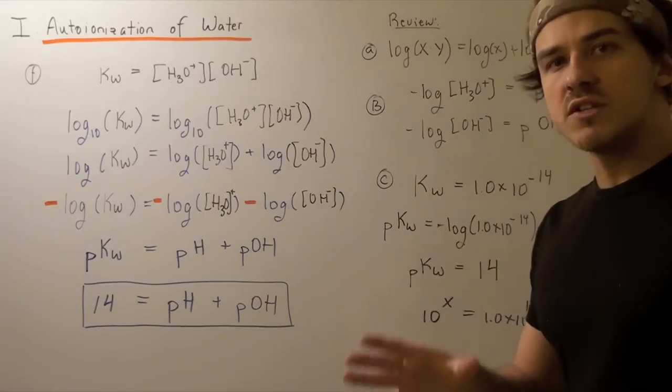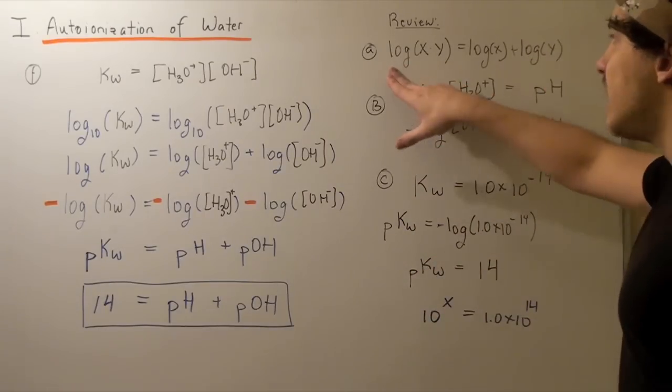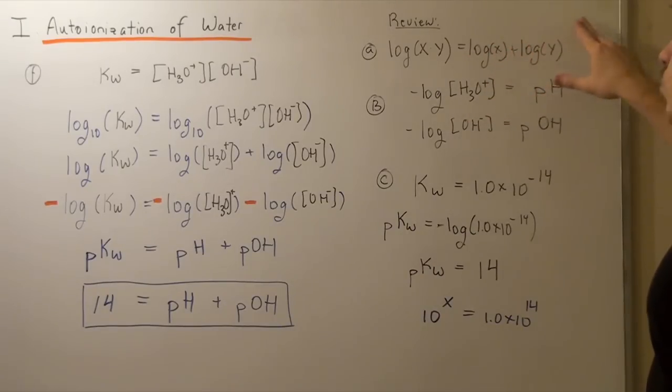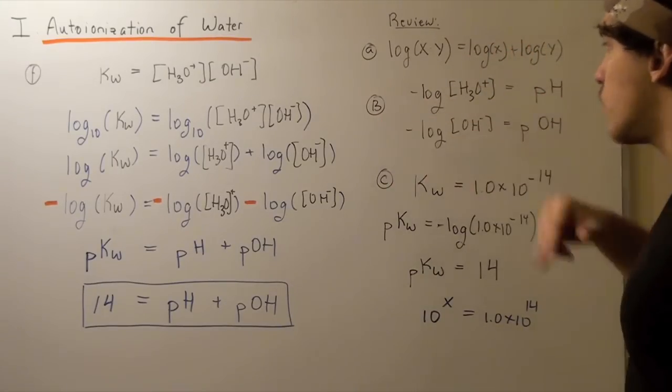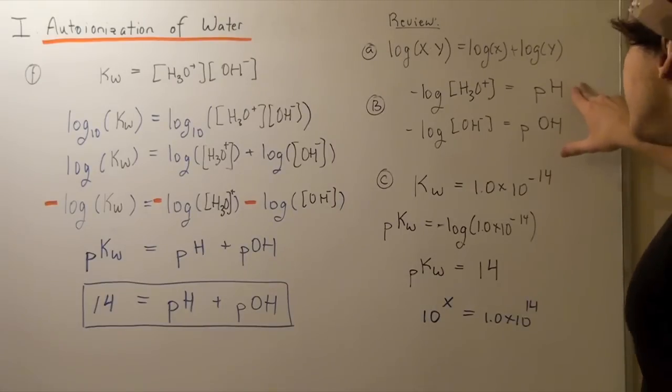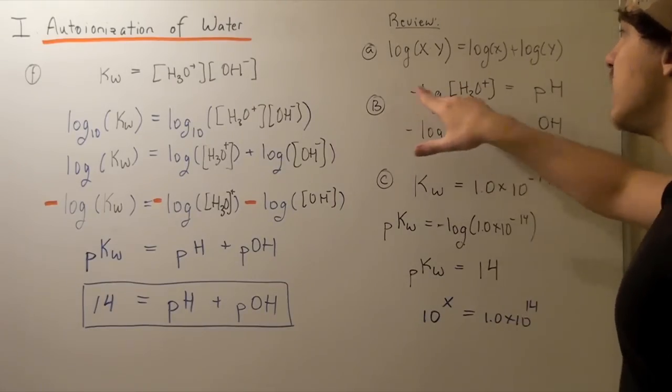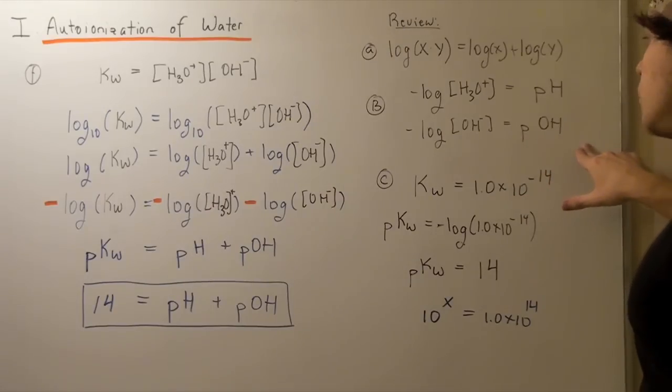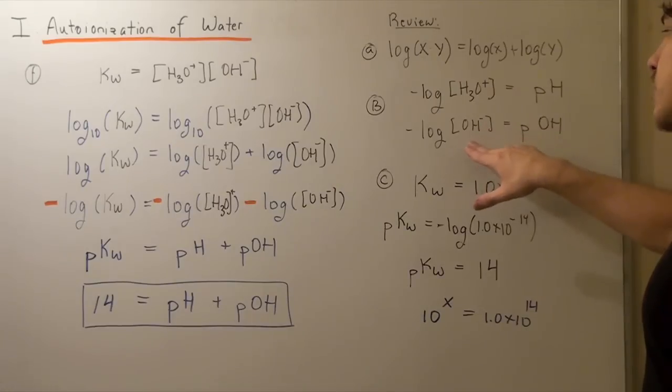Let's review. One of the laws of log states that log of x times y equals log x plus log y. The second part I want to look at is the formulas for pH and pOH. pH is equal to negative log of the hydronium concentration, and pOH is equal to the negative log of the hydroxide concentration.